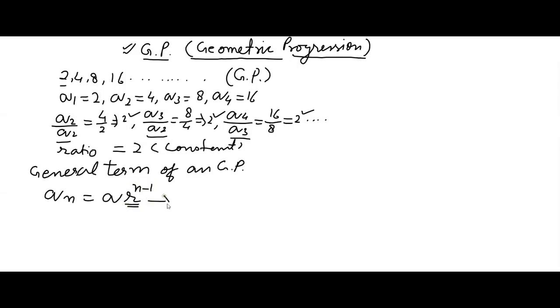R is known as the common ratio of the GP. Similarly, you can say last term, that is L, is also known as A times R raised to the power n minus 1.